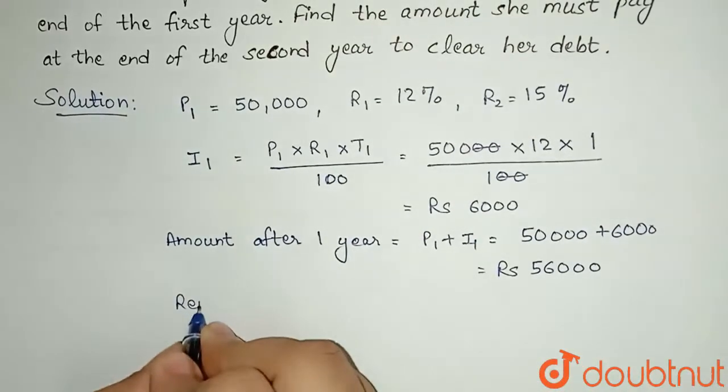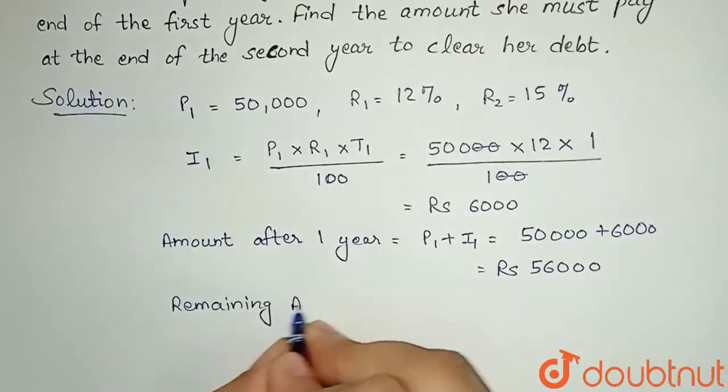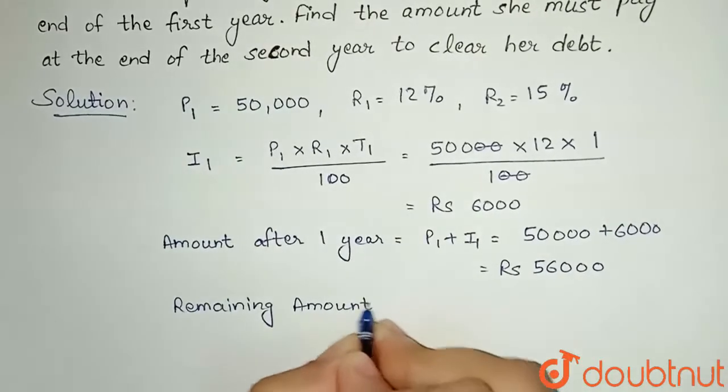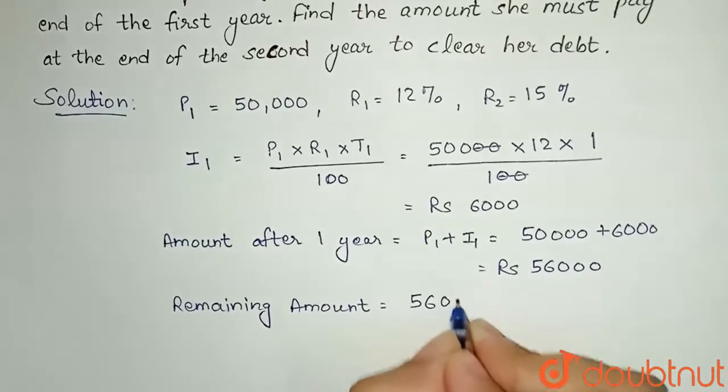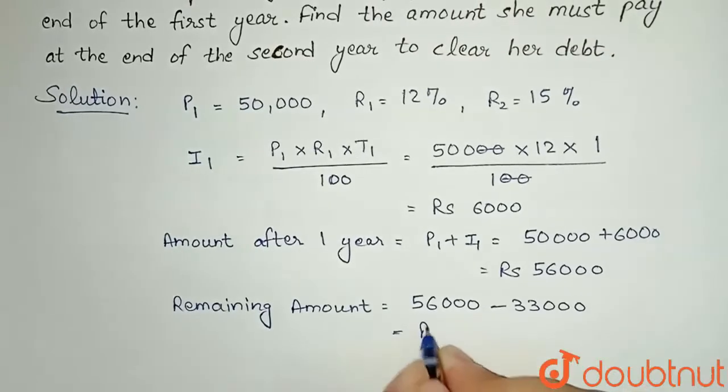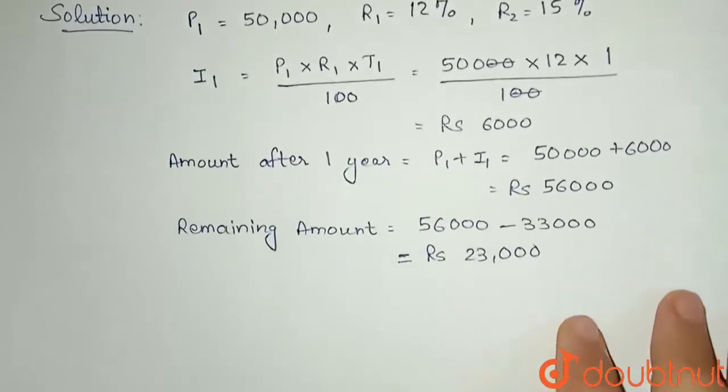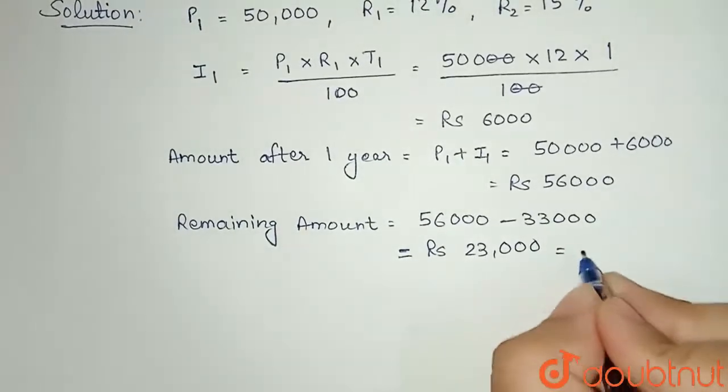So the remaining amount after she has paid is: Remaining Amount = 56,000 - 33,000 = Rs 23,000. For the second year, this will be our principal amount, so P2 = Rs 23,000.